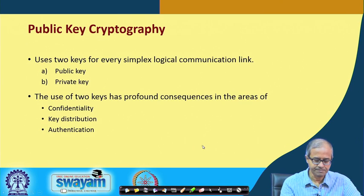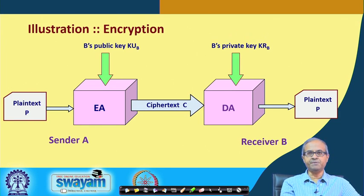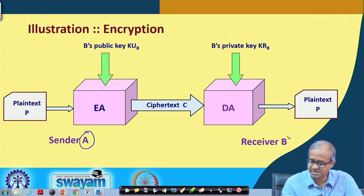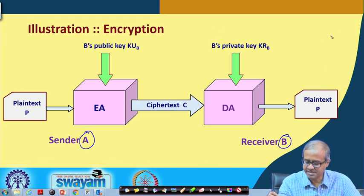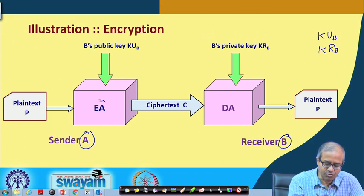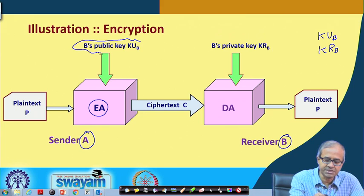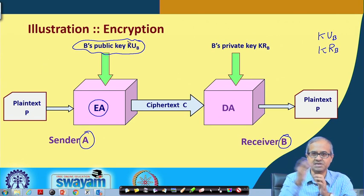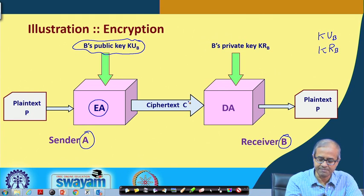Let us see how it works. This is the schematic of a public key encryption system. Let us say there is a sender A which wants to securely send some data to a receiver B. The receiver B will be having a public key KUB and a private key KRB. The idea is that when A wants to send a message to B through encryption, there will be an encryption algorithm which will be using B's public key. B's public key is supposed to be known by everybody, so A also knows it. Using B's public key, this plain text is getting encrypted into the cipher text.